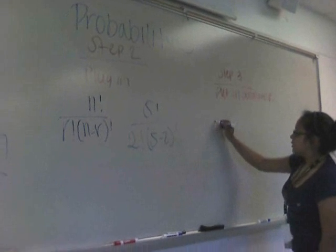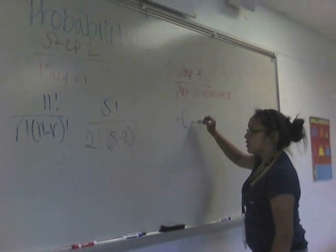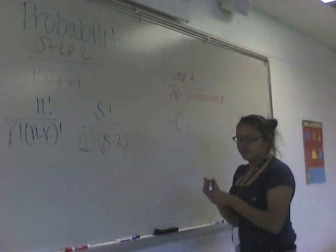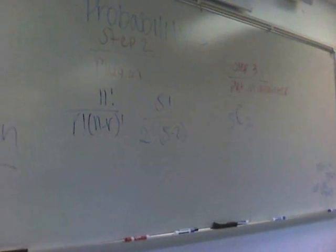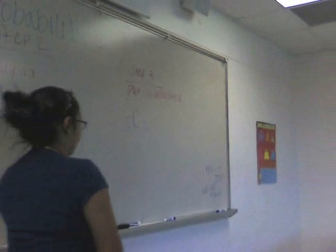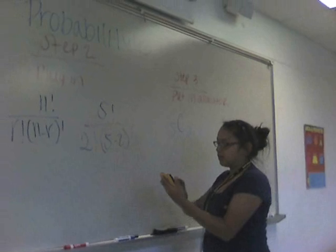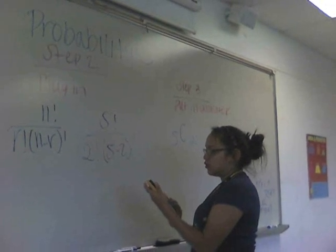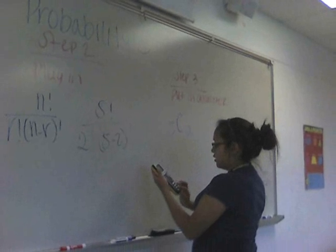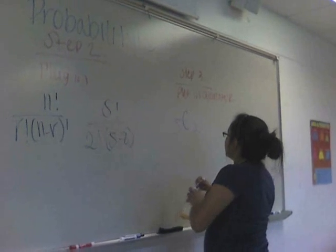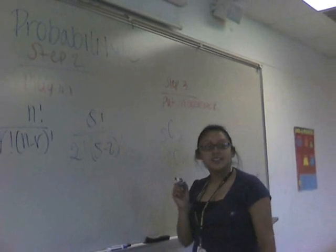First, you put the total, which is five, and then you select the combination function and plug in two, because that's how many you're going to choose from. On the calculator, push five first, then go to Math, to Probability, to option three because that's where the combination function is, then plug in two and you get ten different ways. Don't think just multiplying would work — you actually have to solve it out properly.